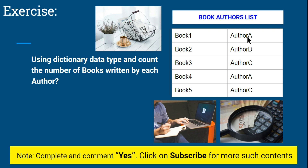For example, book 1 is written by author A, book 2 by author B and C, and author A has written another book — book 4. Author C has written book 5. Using the dictionary data type, you have to count the number of books written by each author — how many books each author has written.